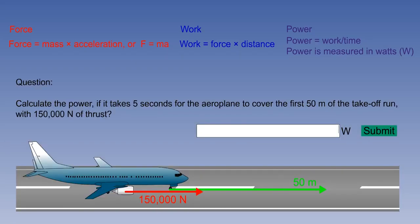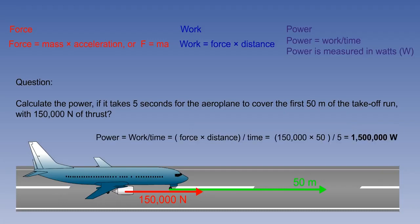Returning to our previous example of an aeroplane on a runway with 150,000 newtons of thrust, calculate the power to cover 50 metres in 5 seconds. Type your answer in the box and click to submit. Power is found by dividing the work done by the time it was achieved in.